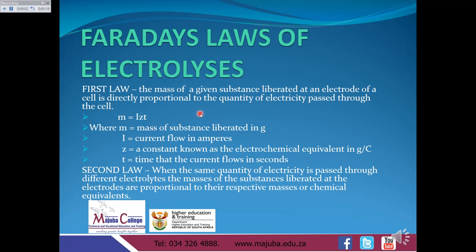Let's take Faraday's law of electrolysis. We've got two laws. The first one states the mass of a given substance liberated at an electrode of a cell is directly proportional to the quantity of electricity passing through the cells. This is M equals to I times by Z times by T, where M is the mass of the substance liberated in grams, I is the current flowing in amperes, Z is the electrochemical equivalent in grams per coulomb, and T is the time in seconds. The second law states that when the same quantity of electricity passes through different electrodes, the masses of the substance liberated at the electrodes are proportional to their respective chemical equivalents.